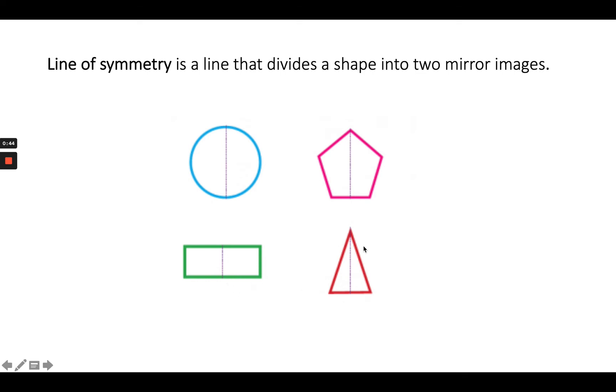You can see the rectangle and the triangle. Again, if I were to fold it along that line, that shape would have symmetry.